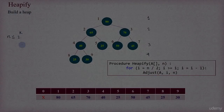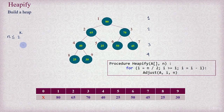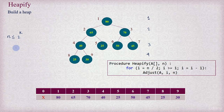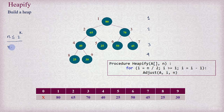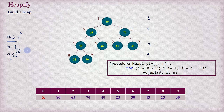This is how the heapify works. Now let's find out the worst case complexity of this heapify operation. We can always find a positive integer k such that the total number of elements n can be expressed as n less than or equal to 2 to the power k. For example, our heap has 9 elements and we can write 9 less than or equal to 2 to the power 4, so k equals 4.